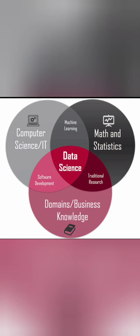If you see, Computer Science and IT on the left side has a lot of components like machine learning, data science, and software development. Similarly, when you are studying mathematics and statistics based analysis, you need a small amount of machine learning, a lot of data science, and traditional research. And when studying domain or business specific knowledge, you may also use data science, software development, and traditional research. So data science is basically the intersection between three fields: Computer Science, Mathematics and Statistics, and business or domain specific application.